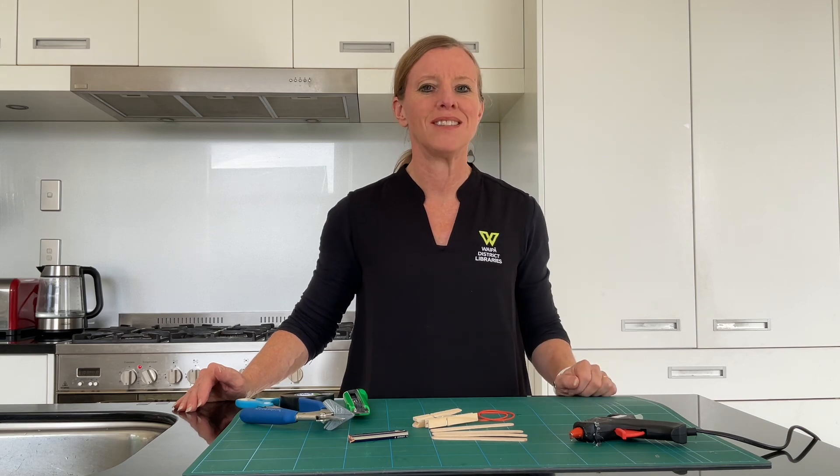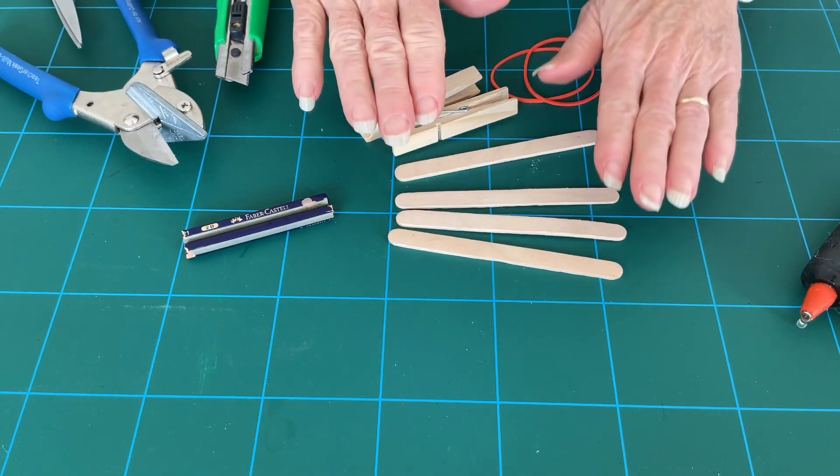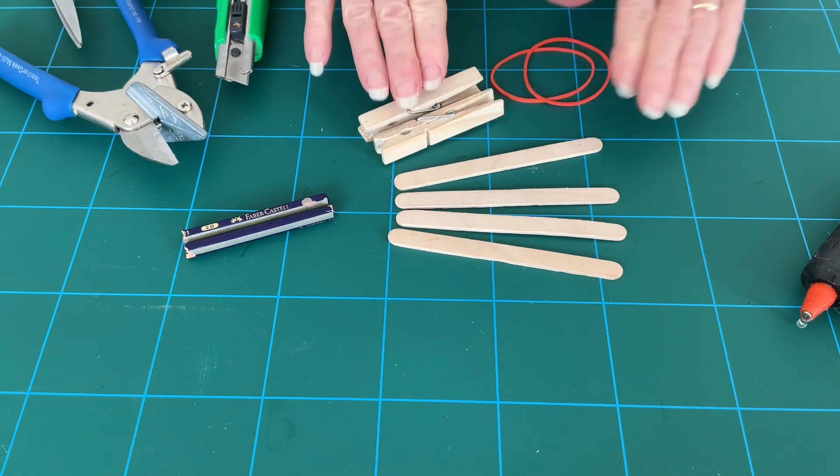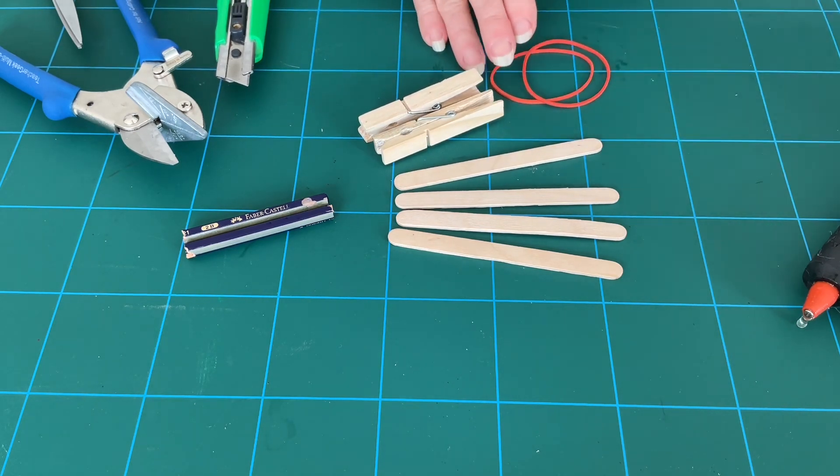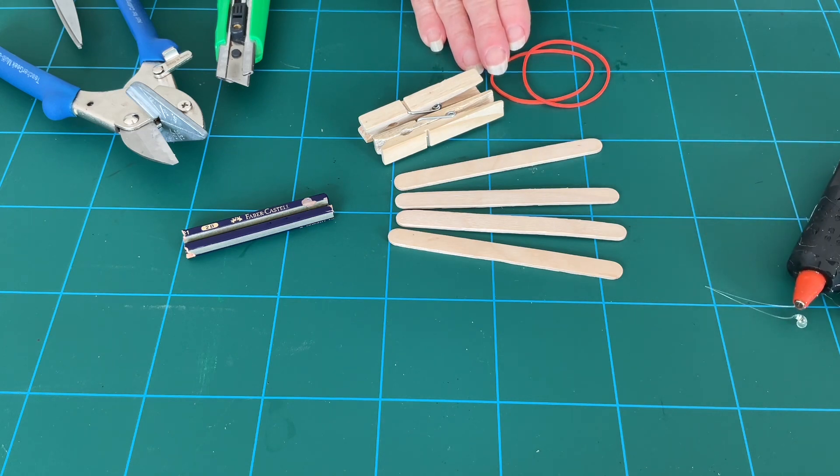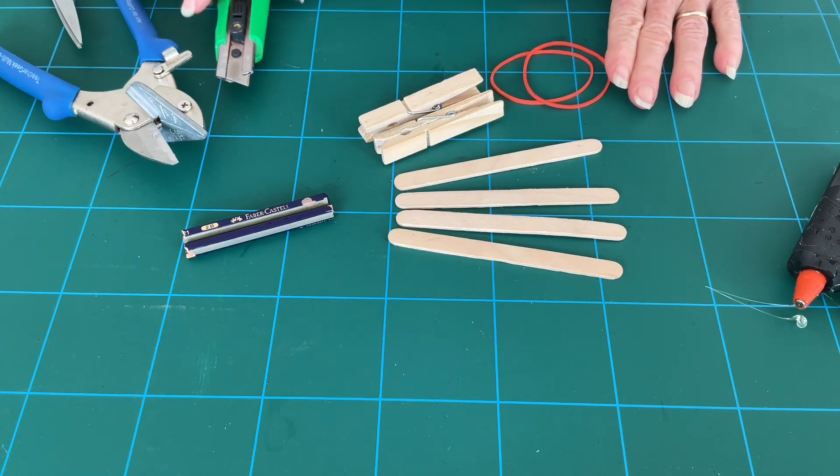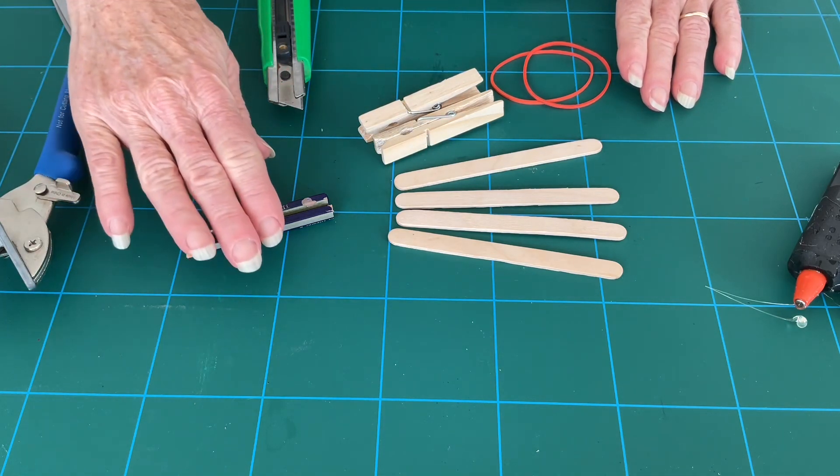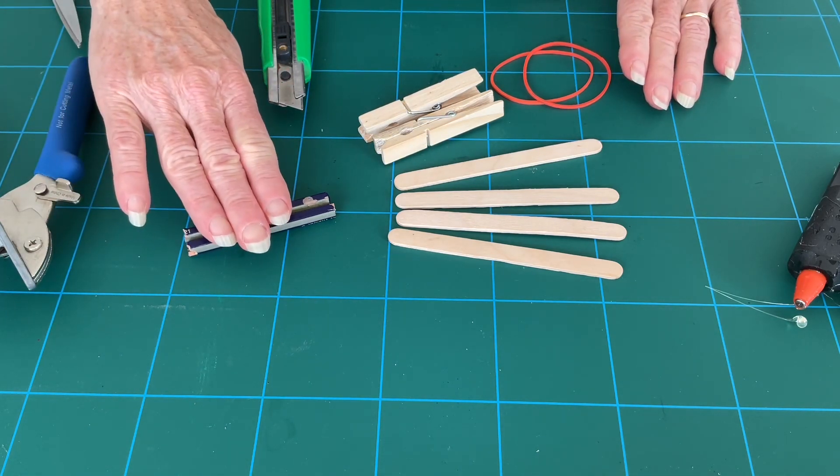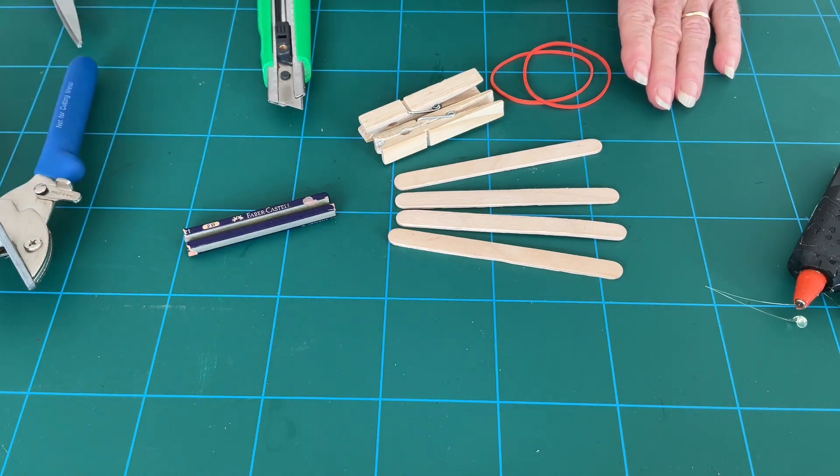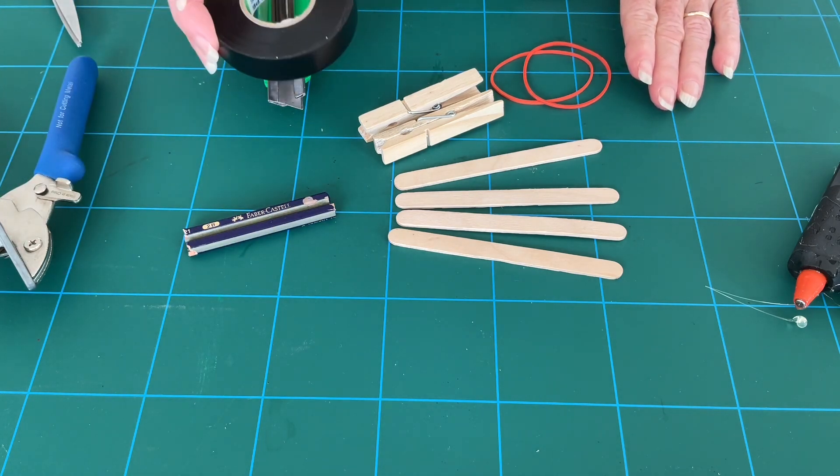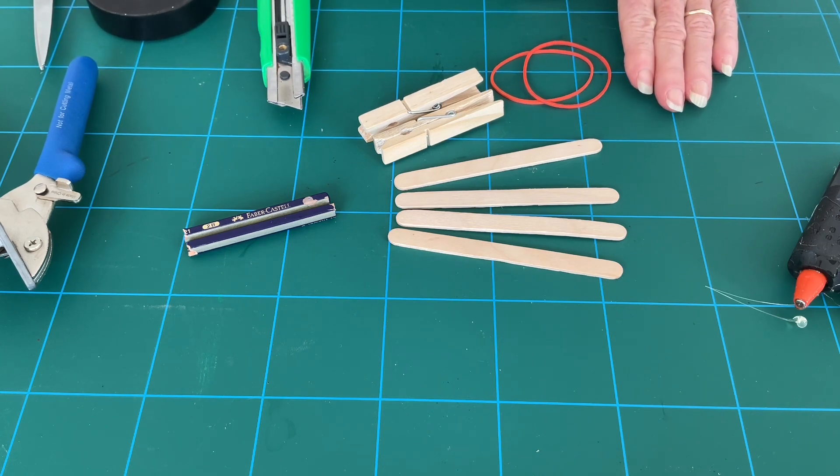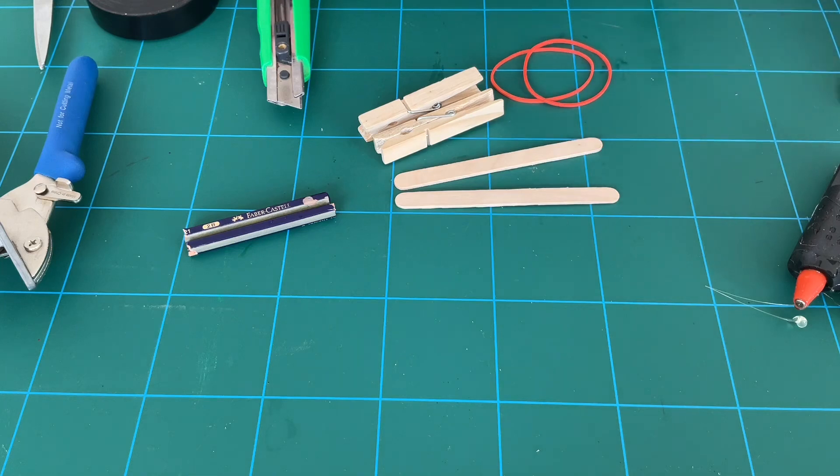To put this launcher together, we're going to need four lolly sticks, two pegs, a couple of rubber bands, hot glue or epoxy glue, a craft knife or cutter, a pencil which we're going to cut in half, and you may need an adult to help you. I've also got some tape and scissors.